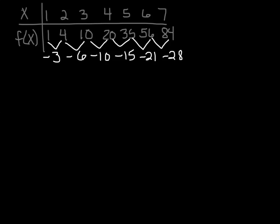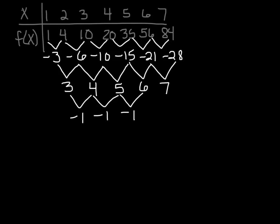They're not the same, so it's not linear. Let's try again. Negative 3 minus negative 6 would be 3. Negative 6 minus negative 10 would be 4. Negative 10 minus negative 15 would be 5. Negative 15 minus negative 21 is 6. And negative 21 minus negative 28 is 7. So second order is still not all constant. They're not all the same. So it's not quadratic either. 3 minus 4 is negative 1. 4 minus 5 is negative 1. 5 minus 6 is negative 1. 6 minus 7 is negative 1. So these are third order. And third order means cubic.